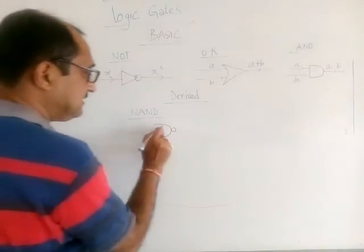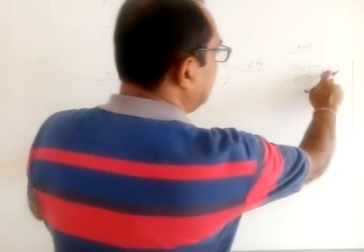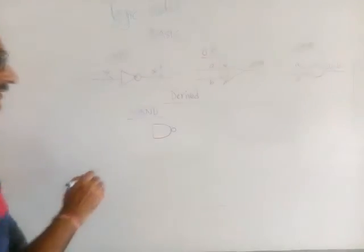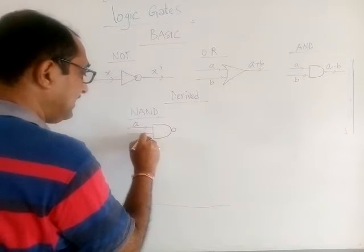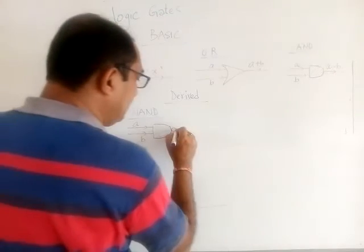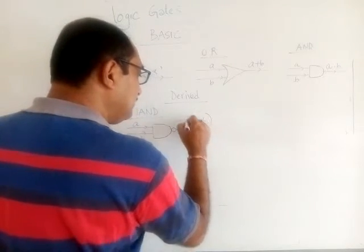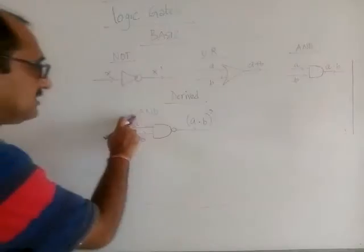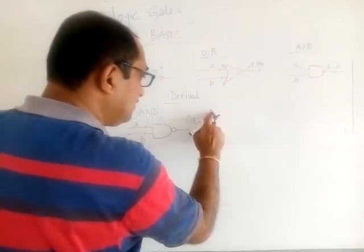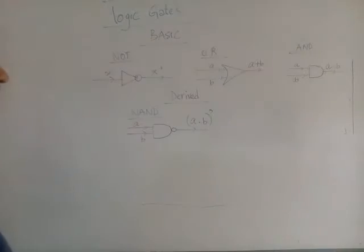So between AND and NAND there is only one difference — NAND has a circle at the output and AND does not. If you pass two inputs A and B, NAND will give you the output which is the complement of A dot B — that is, (A dot B) complement. That is what is the output produced by the NAND gate.